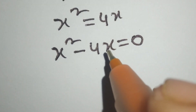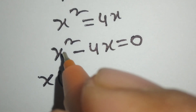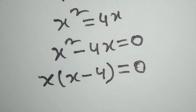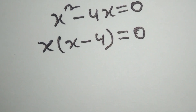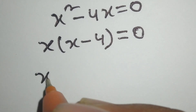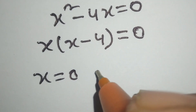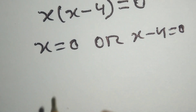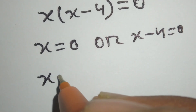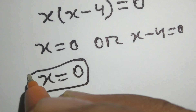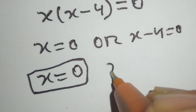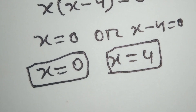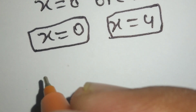From here we take x common: x times (x minus 4) is equal to 0. So x is equal to 0, or x minus 4 is equal to 0, giving x equal to 4. These are our two answers. Now we will check — remember the original equation: square root of x plus square root of x is equal to x.